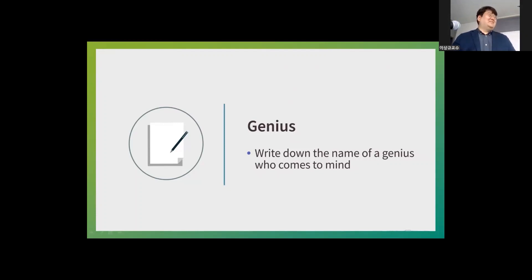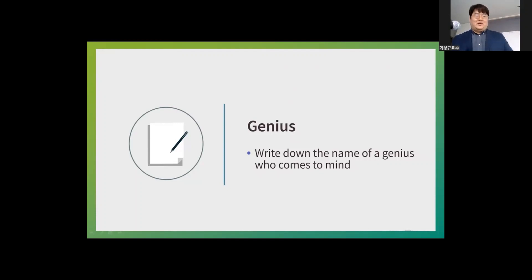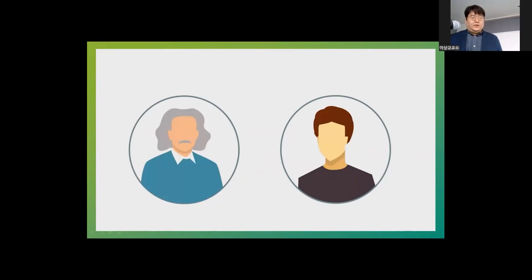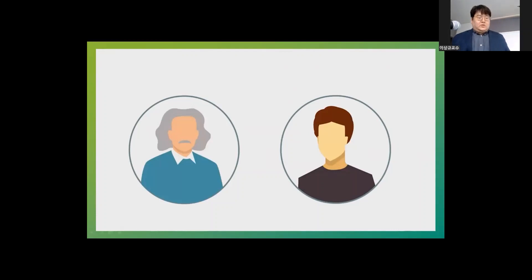King Sejong was one answer. I'd like to hear from the female students too. Most people thought of a male genius — Einstein, Edison, or King Sejong. Very few people think of Marie Curie, except for the professors here. She was the first human being to win two Nobel Prizes. The archetype for 'genius' is a certain kind of man.